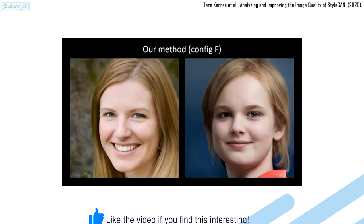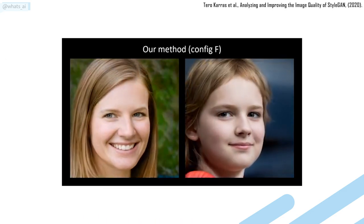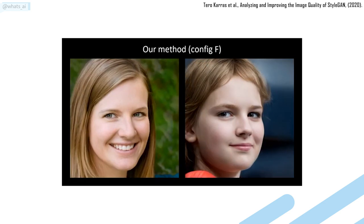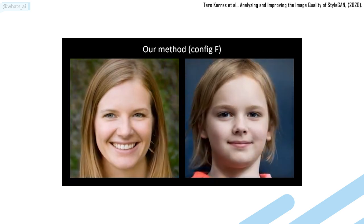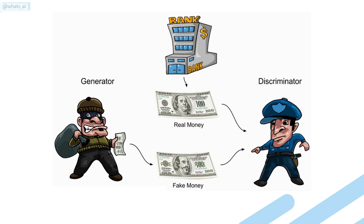It is just like StyleGAN, which is able to generate unique and non-existing human faces being trained on a dataset of real faces. The difference is that it uses this GAN architecture in a traditional generative and discriminative way with convolutional neural networks. A classic GAN architecture will have a generator, trained to generate the image, and a discriminator,